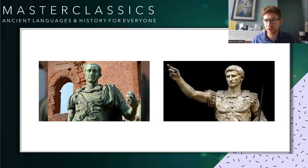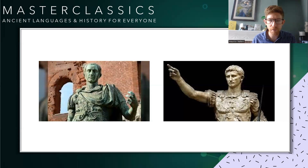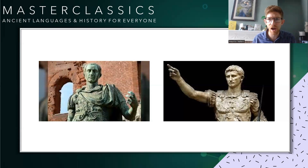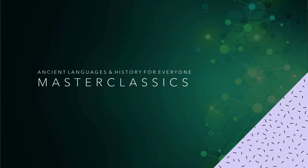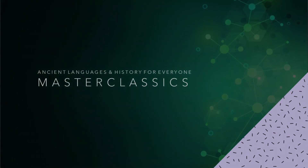Mark Antony decides he wants to go and rule a really rich province — we talked about ruling a province being a good way to get power, responsibility, and authority. He decides to take himself off and rule Cisalpine Gaul, which is a very rich province. The problem is there's already somebody there — a man called Decimus Brutus. But Antony doesn't mind; he takes his own army up there. Rome turns to Cicero, one of their former leaders, who suggests they talk to Gaius Octavius. They ask him to go and sort out Mark Antony, and so we leave the story there for this week.